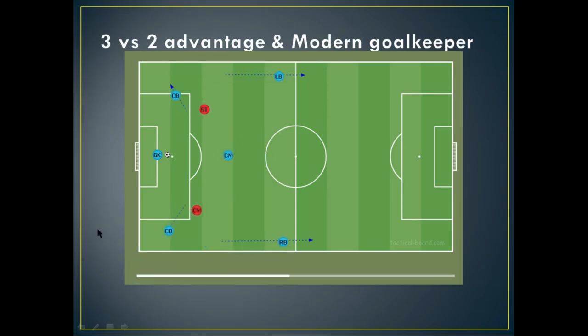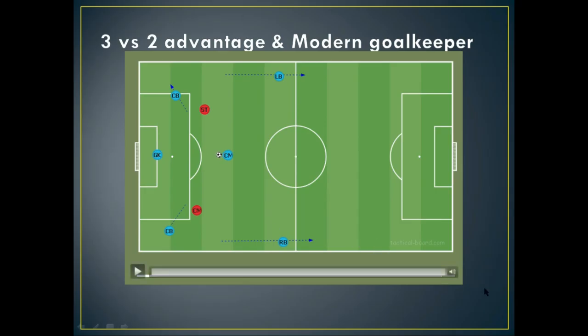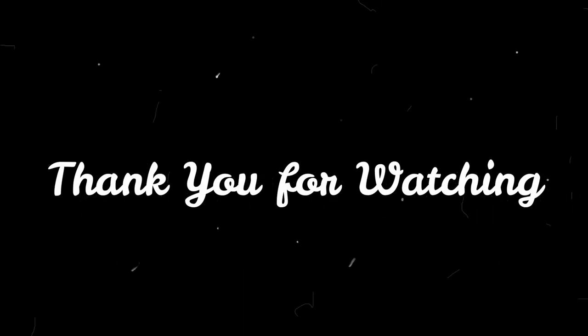To break this two versus two disadvantage, managers opt for a three versus two advantage by assigning a modern role to the goalkeeper. The left backs and right backs are pushed way up the field, which opens spaces for the center backs to occupy adjacent to the goalkeeper. The pressing opponents align to those positions, creating an open area for the center midfielder to receive the pass. That's how the three versus two advantage is created using the goalkeeper.